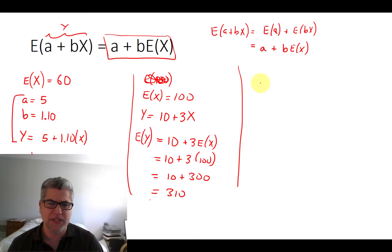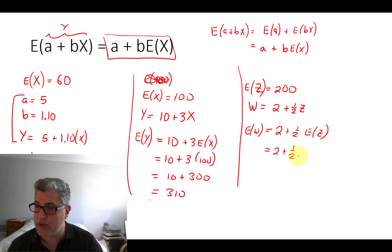If we had some variable, let's give it a different name this time, let's call it a random variable z equal to 200. And you wanted to construct some new random variable, let's call it w, which is 2 plus 1 half of z. What's the expected value of our transformed variable if the original variable had an average of 200? We would just say 2 plus 1 half the original average, so 2 plus 1 half of 200. Half of 200 is 100, so that average comes out to 102.